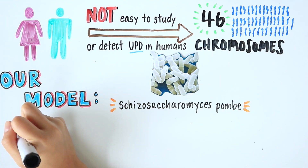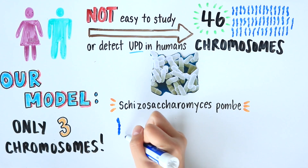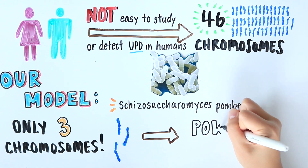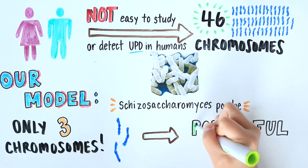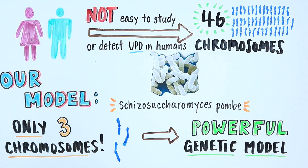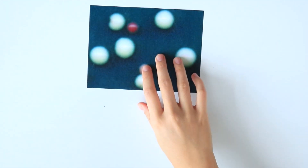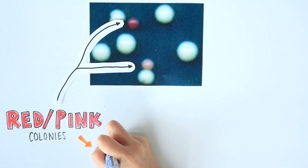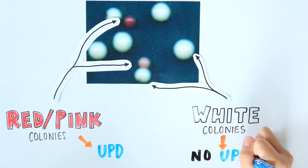The fission yeast genome only has three chromosomes, yet it shares many features of chromosomal structure and gene regulation with human cells, making it a powerful genetic model. One advantage of this model is that we could employ genetic markers that produce a color readout for UPD detection. As shown in this picture, UPD has occurred in the red and pink yeast colonies, but not in the white ones.